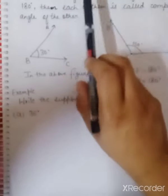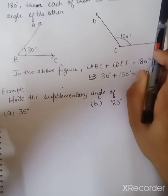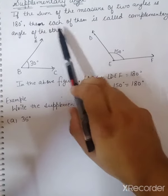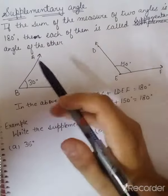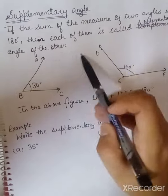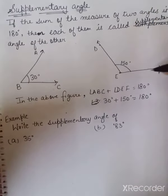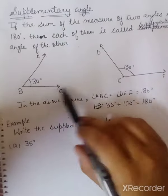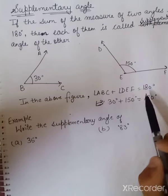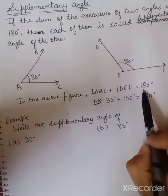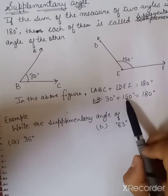Now we will talk about supplementary angles. What is a supplementary angle? If the sum of the measure of two angles is 180 degrees, then each of them is called the supplementary angle of the other. Looking at the figure, angle ABC is 30 degrees and angle DEF is 150 degrees. When we add both these two angles, we get 180 degrees. So 30 plus 150 equals 180.